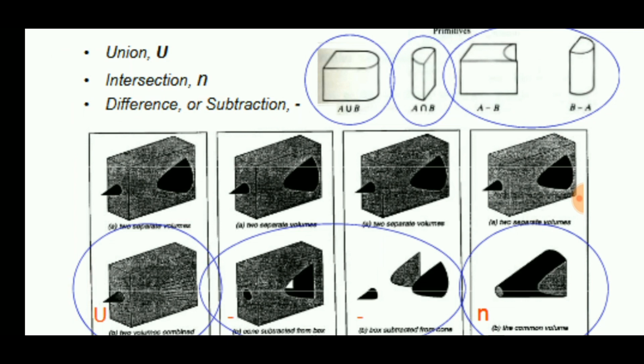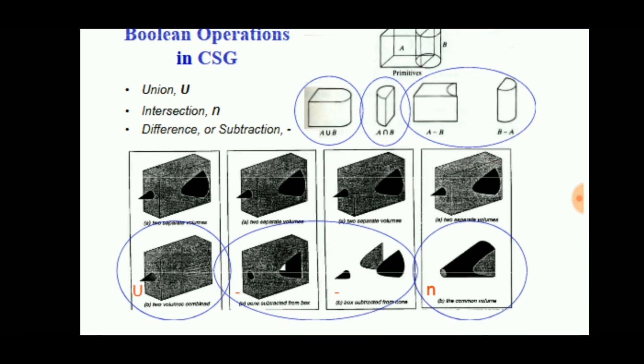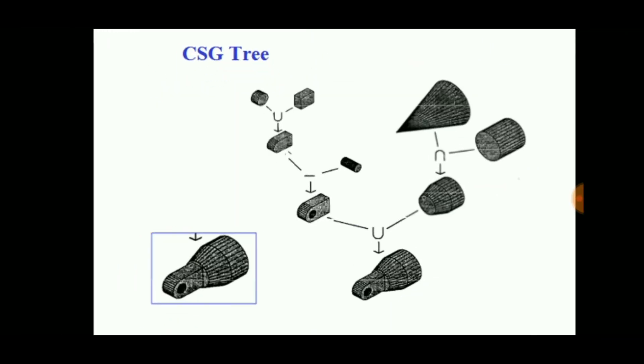These are some of the basic commands like intersection or subtraction. What is the CSG tree? It means a complete product is exploded and placed in parts, and it shows how the product is built.